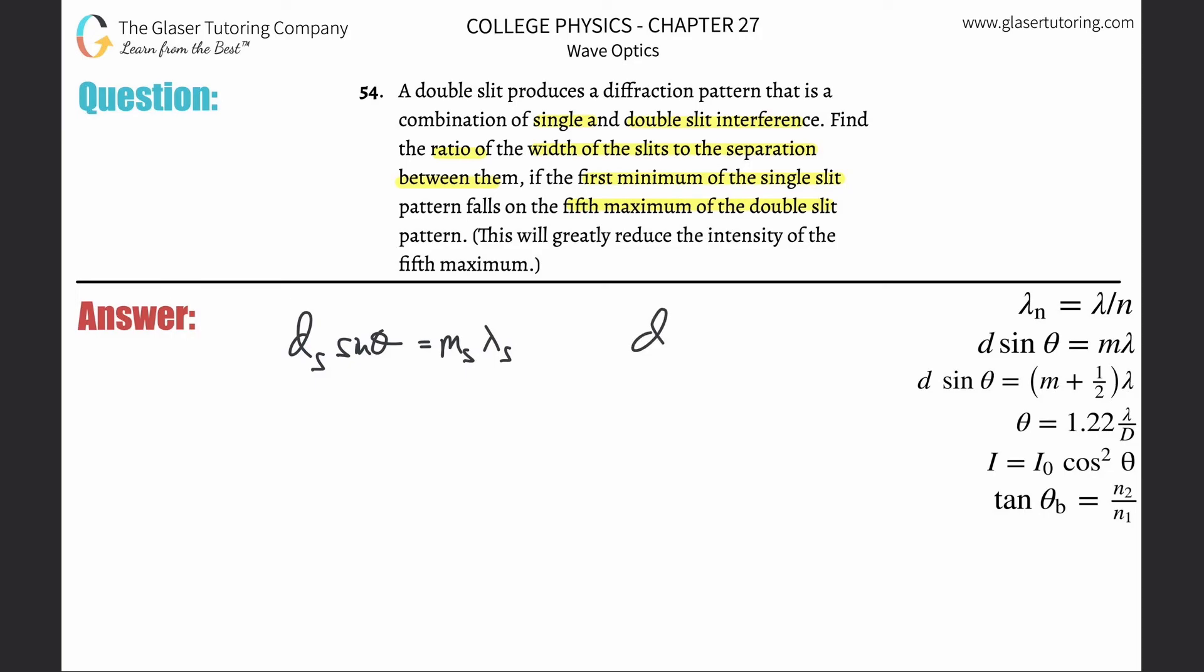And then here we're going to do DD, meaning this will be the distance between the double slit, times the sine of the angle. I'll put a little D here. And this is the order of the maximum now, because I'm talking about a double slit, times the wavelength of the light passing through the double slit.